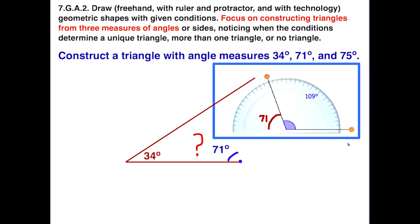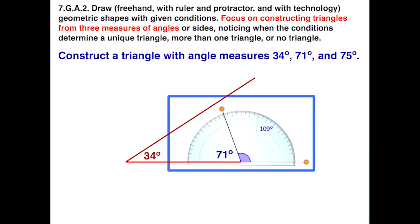We can use this little trick of using the supplement of an angle to get the angle that we want. So let's put our protractor in the proper location, and we'll measure off 109 degrees instead to get the 71 degree angle that we want as part of our triangle. So now we would use our ruler and draw our segment.